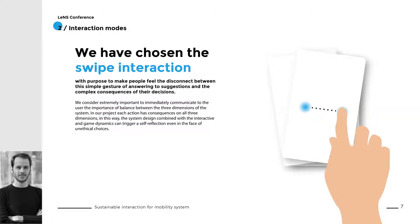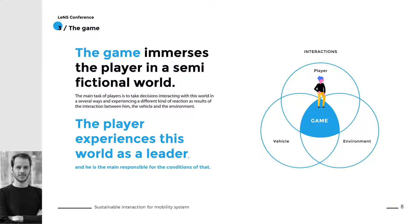Concerning interaction mode, we chose swipe interaction with the purpose of making the user feel the disconnect between the simple gesture of responding to a suggestion and the complex consequences of their decision. The game immerses the player in a semi-fictional world. The player's role is as a leader, and their main task is to make decisions by interacting with the vehicle and the environment in several ways. Ultimately, the player is the main person responsible for the condition of this world.